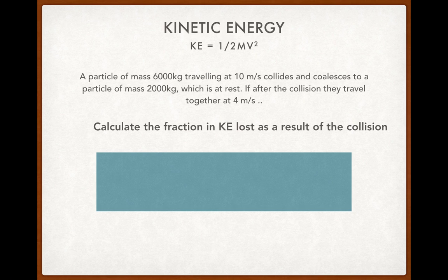So there's only one particle moving beforehand. That means we have a kinetic energy of one particle before. It's a half mv squared where v is the speed. So a half 6000 by 10 squared gives me 300,000.